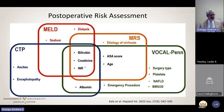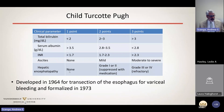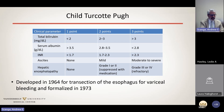The CTP score was the first model developed — originally in 1964 to predict who would do poorly with transection of the esophagus for variceal bleeding, and formalized in 1973. In addition to bilirubin, creatinine, and INR, it includes ascites, encephalopathy, and albumin. You plug variables into a table and get points based on severity, generating a score from five to 15. Three variables are objective and two are subjective — ascites grading and encephalopathy grading can be a gray zone, which is one of the pitfalls. It was mostly applied to intra-abdominal surgeries at first.